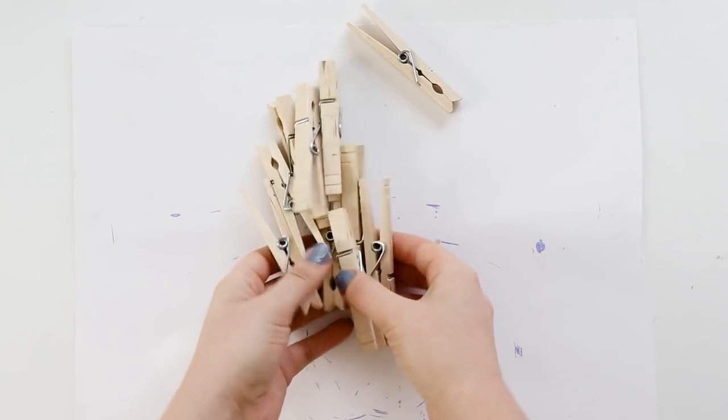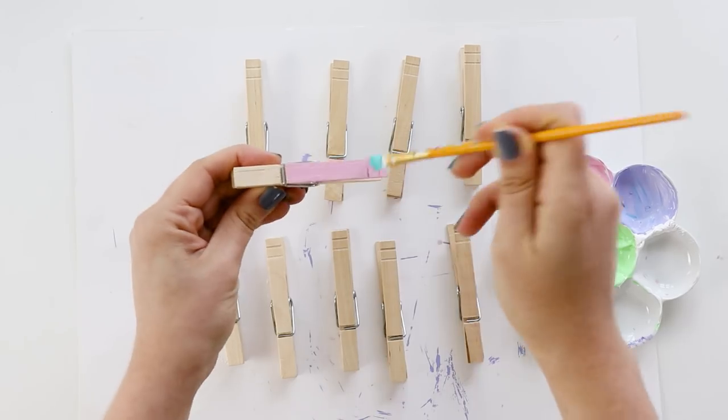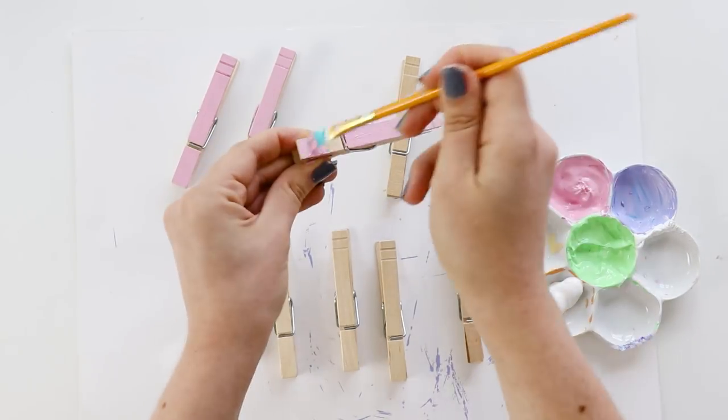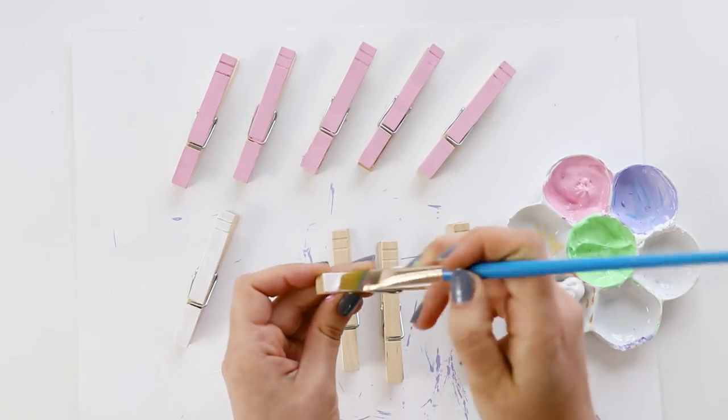So we're almost done. We're just going to make our little soccer players out of clothespins. You'll need ten clothespins and I decided to paint them different colors so it would be easy to tell who is on which team.